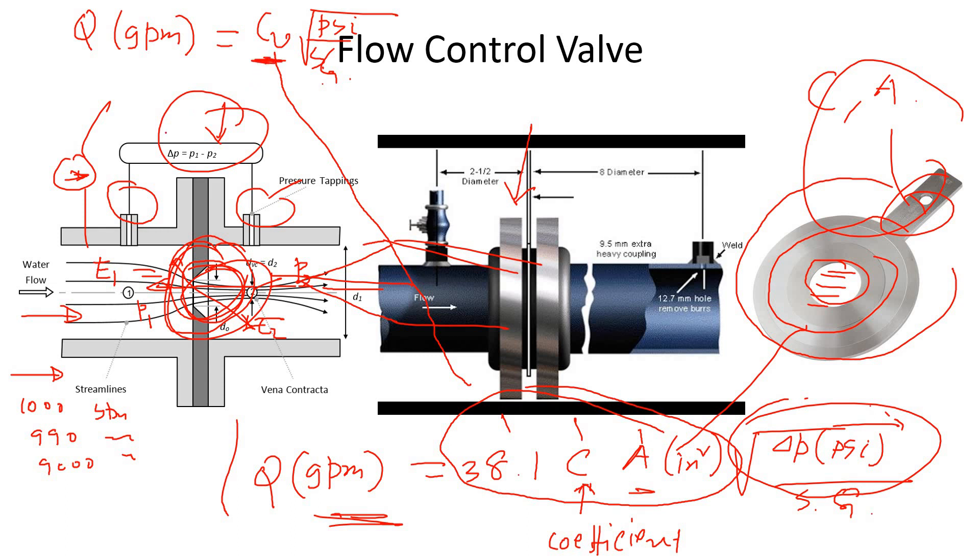When you measure the pressure, whatever the pressure difference is - delta psi - basically delta P is in psi, divided by the specific gravity. Very similar equation.